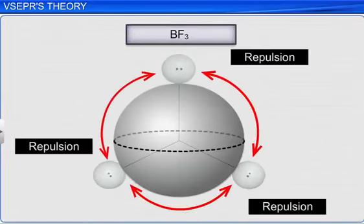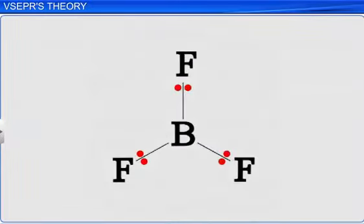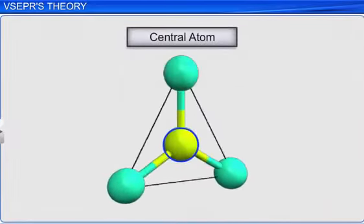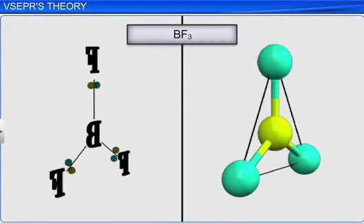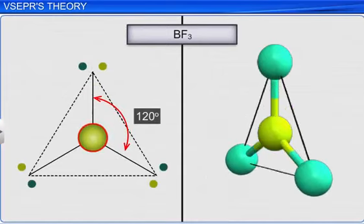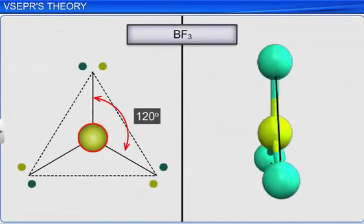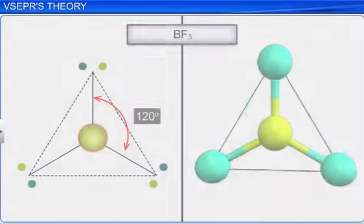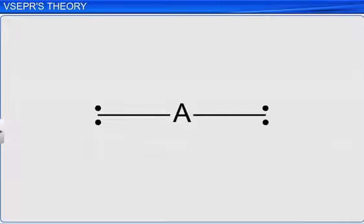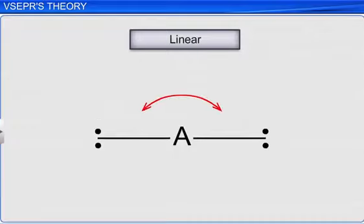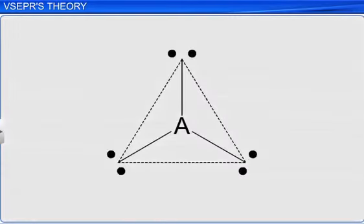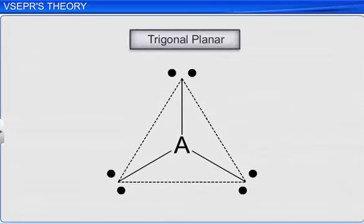The shape of a molecule depends upon the number of valence electron pairs and their arrangement around the central atom. The geometry of a molecule in which the central atom does not have a lone pair of electrons will be regular without any distortion. For example, the shape of a molecule with two bonded electron pairs around the central atom will be linear, with a bond angle of 180 degrees. The shape of a molecule with three bonded electron pairs around the central atom will be trigonal planar, with a bond angle of 120 degrees, and so on.